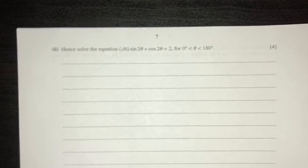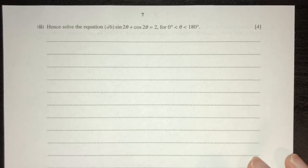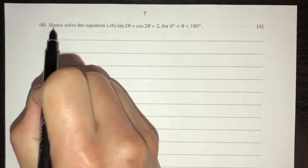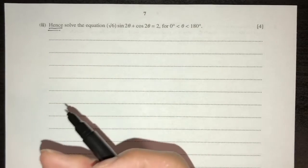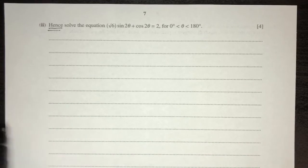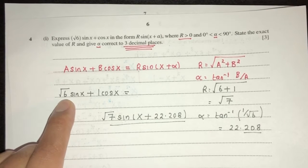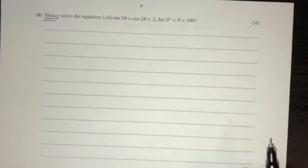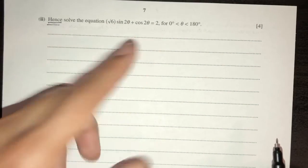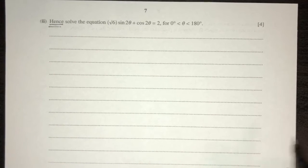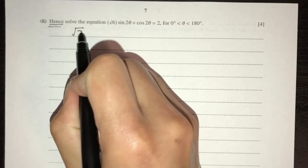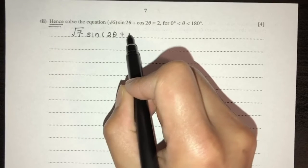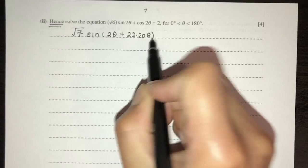Part two: solve the equation using the previous result. Since we now have 2θ instead of x, the expression becomes √7·sin(2θ + 22.208) = 2. Making sine the subject: sin(2θ + 22.208) = 2/√7. Since sine is positive, solutions exist in the first and second quadrants.